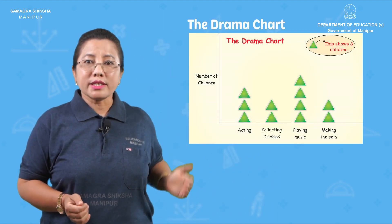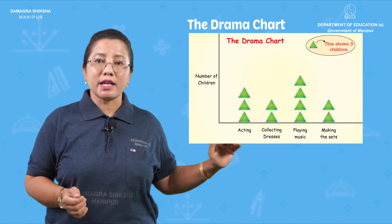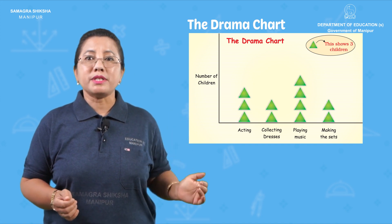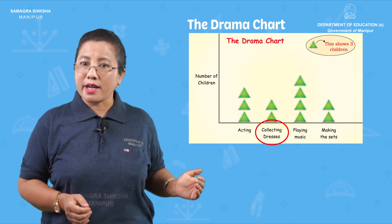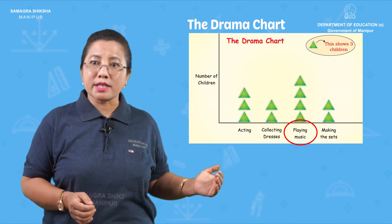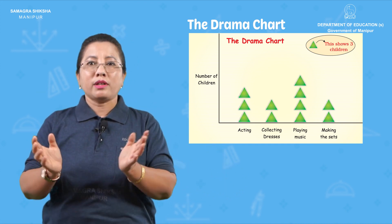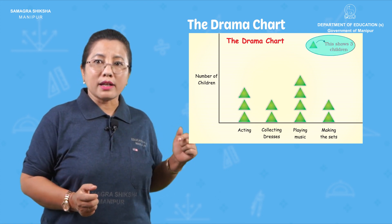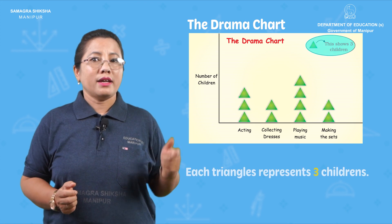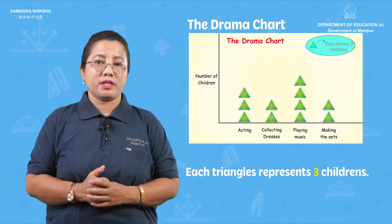People work together on various activities: collecting dresses, playing music, making sets, etc. This is not just a symbol — this is a triangle, and each triangle represents three children. It is a symbol used in this pictograph.